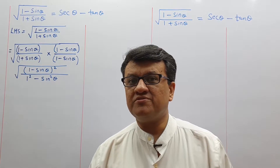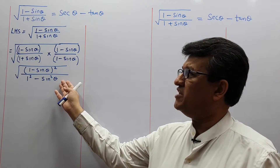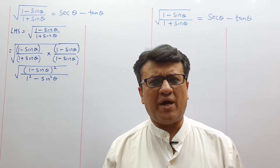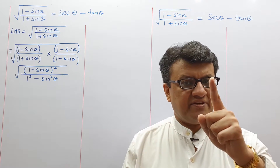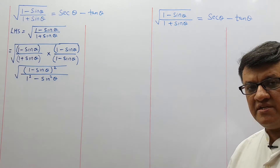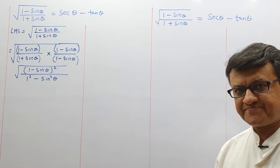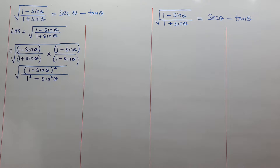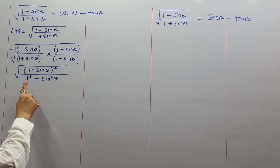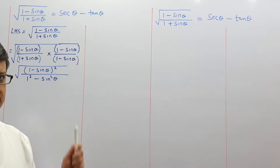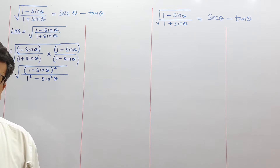A student asks: 'When multiplying by the conjugate, a²-b² will always be in the denominator — why did you say the converse can happen?' Sir replies: just wait five to ten minutes; the moment I finish this solution I shall make you understand. Continuing: we have (1 - sinθ)² in the numerator and 1² - sin²θ in the denominator. The a²-b² is there, and (a-b)² is there. Never expand (a+b)² or (a-b)².